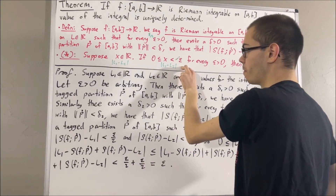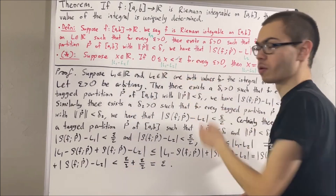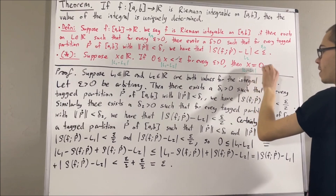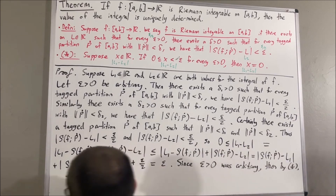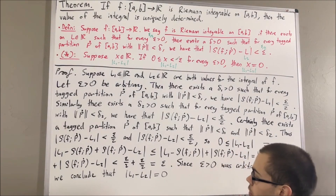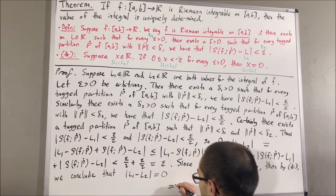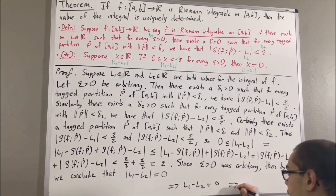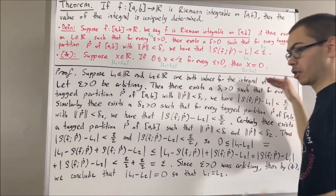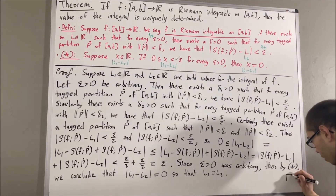We have shown that 0 ≤ |L1 − L2| < ε for an arbitrary ε > 0. Since ε was arbitrary, this holds for every ε > 0. Our preliminary result then implies |L1 − L2| = 0. Since the absolute value of a number equals 0 only when the number itself is 0, this implies L1 − L2 = 0, and so L1 = L2. This shows if L1 and L2 are both values for the integral of f, they must be equal — so the value of the integral is uniquely determined, and this completes the proof.